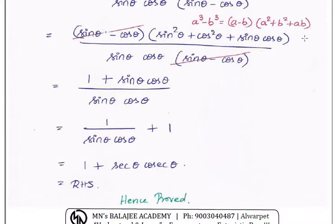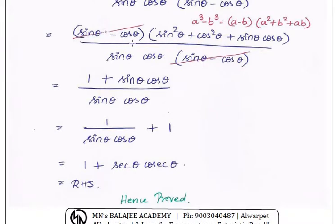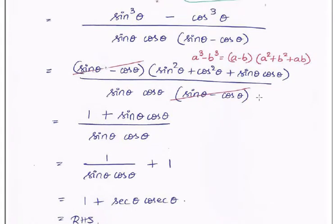We apply the a³ minus b³ formula: a³ - b³ = (a - b)(a² + b² + ab). Here, sin³ minus cos³ factors as (sin minus cos)(sin² + cos² + sin·cos). In the denominator we also have sin·theta minus cos·theta, so the (sin minus cos) factors cancel from numerator and denominator.